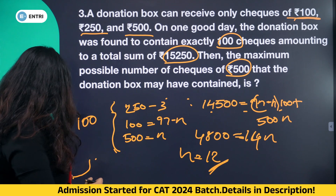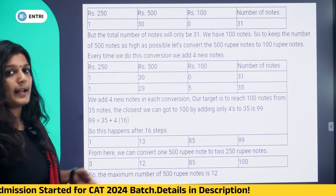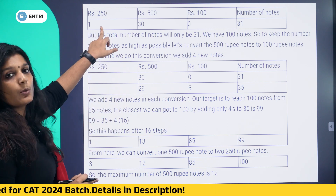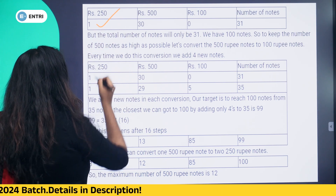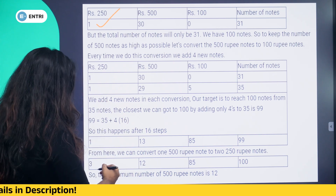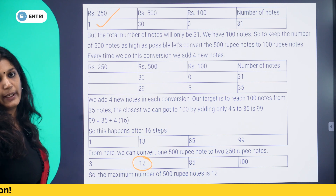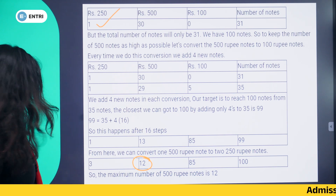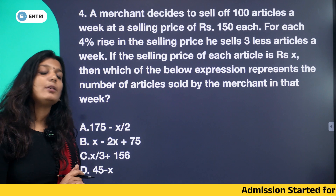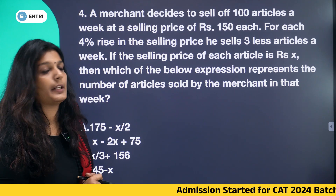To summarize question 3: with 12 notes of 500 and 3 notes of 250, and the remaining 100-denomination checks making up the balance, we satisfy all conditions. Let's move on to question number 4.